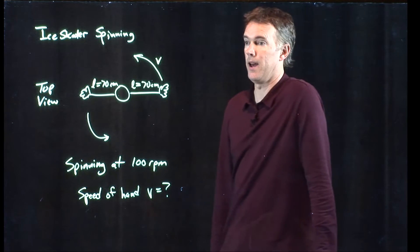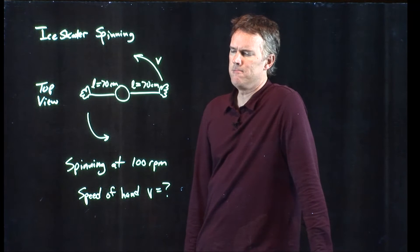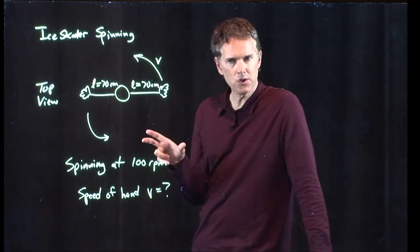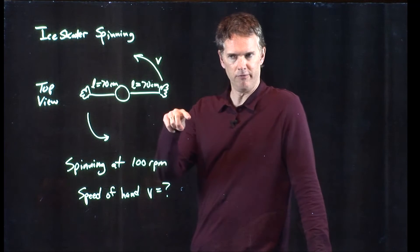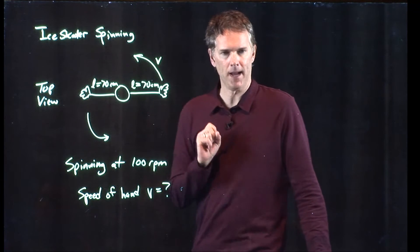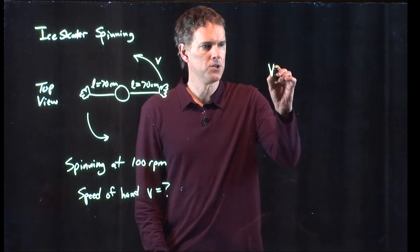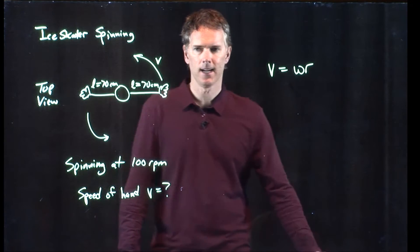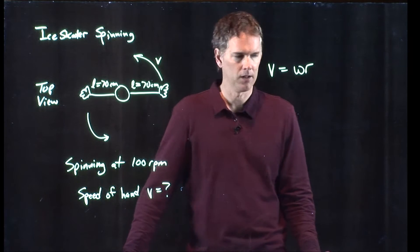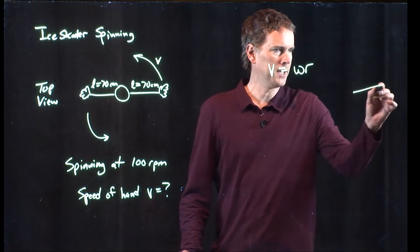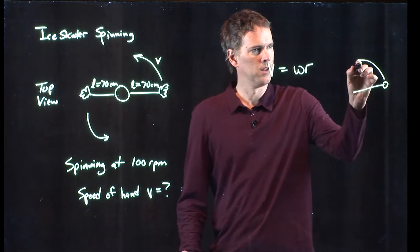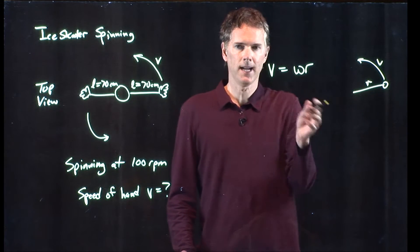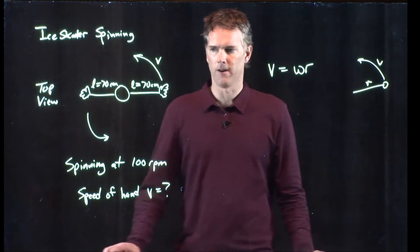How do we do that? Well, first we realize that there is a nice relationship between V and Omega. The relationship is: V is equal to Omega times R. So if something is spinning in a circle, how fast is it moving? It depends on Omega and it depends on the radius R.